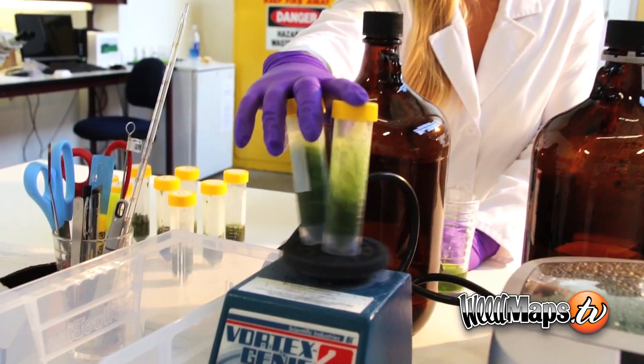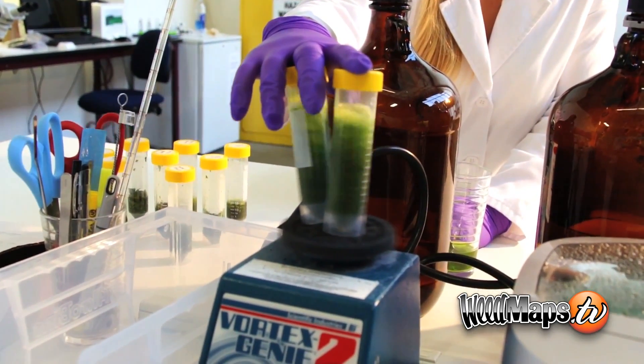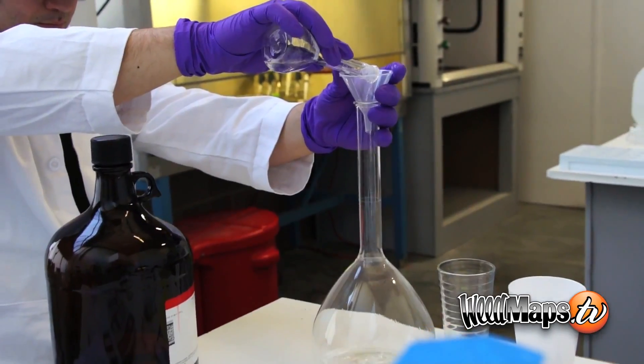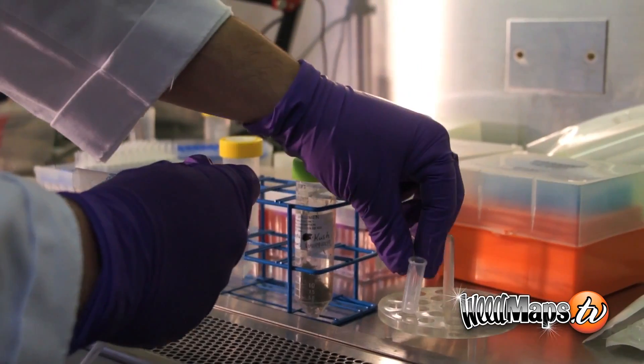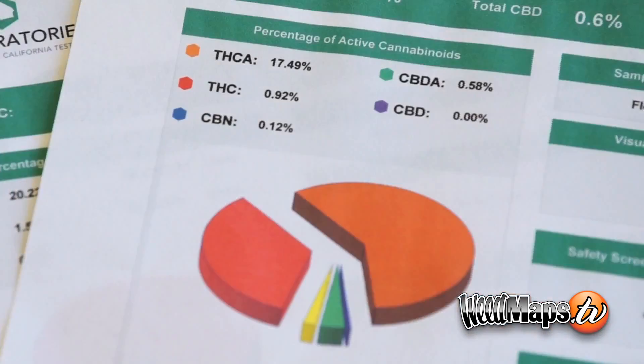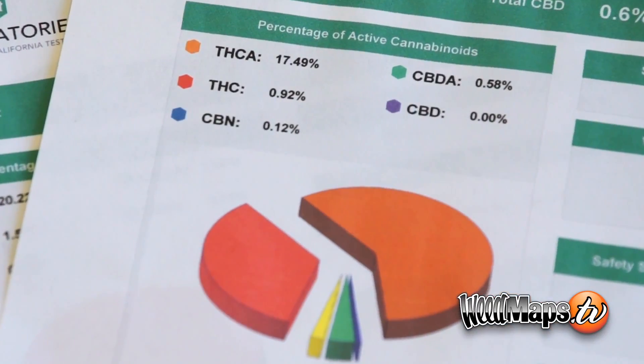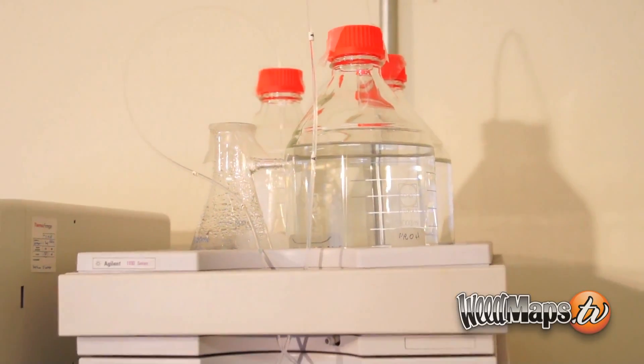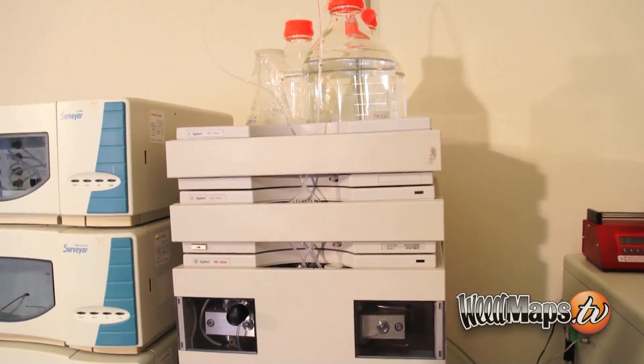When cannabis is tested in a testing facility, CBN can be measured, and usually it's under 1%. A patient can actually look to see if that's something they're interested in — a higher percent or lower percent — because it does cause sedation. SC Labs tests for CBN using a high-performance liquid chromatograph, also known as an HPLC.